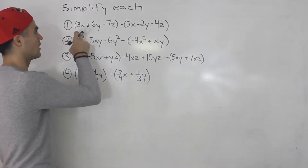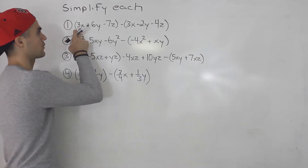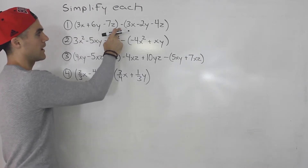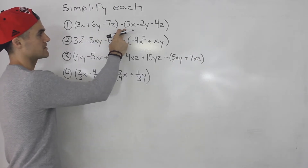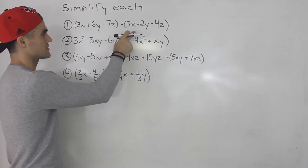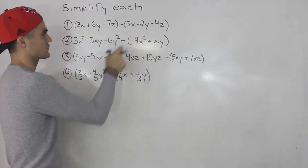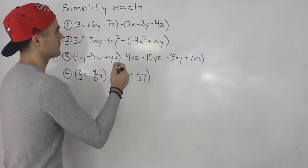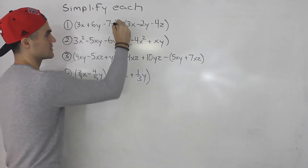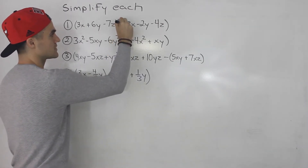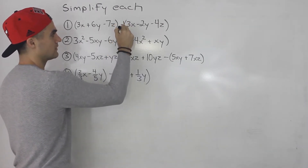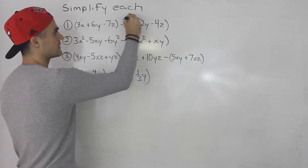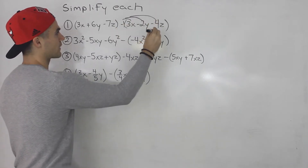Starting off with number one, we got 3x plus 6y minus 7z minus, in brackets, 3x minus 2y minus 4z. The first thing we have to do here is distribute this negative one that's in front inside the bracket.